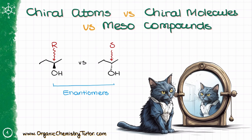Let's look at these two structures. I have R-2-butanol and S-2-butanol. I talked about assigning R and S stereodescriptors in my other video, so if you haven't seen that one yet, check that one out. These two molecules are mirror images of each other, yet it is impossible to make one of them look exactly like the other one in three dimensions without physically breaking bonds and reassembling the molecule anew.